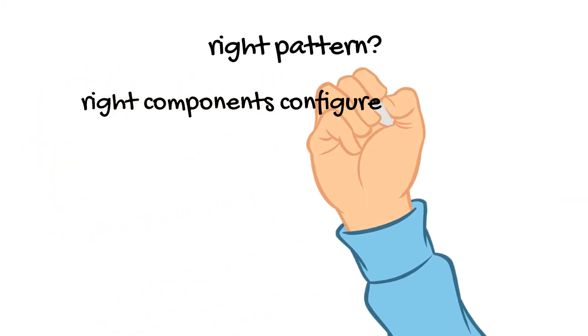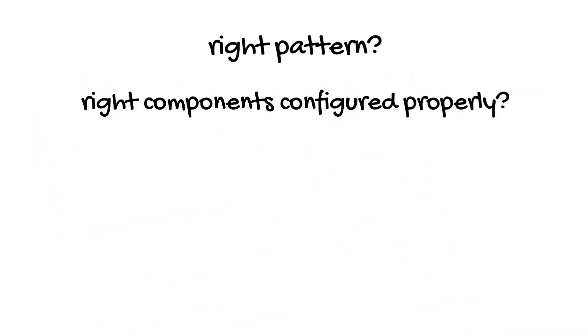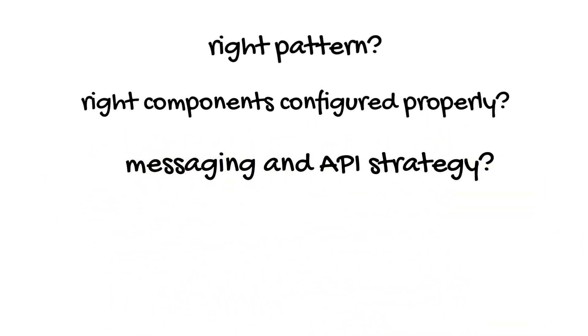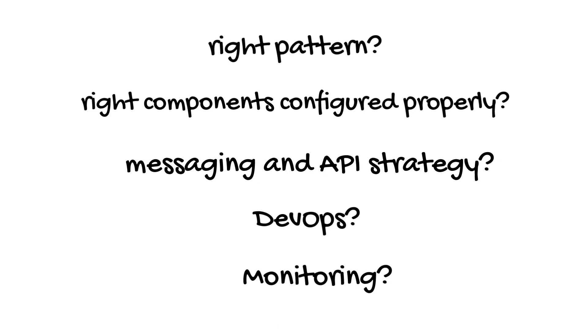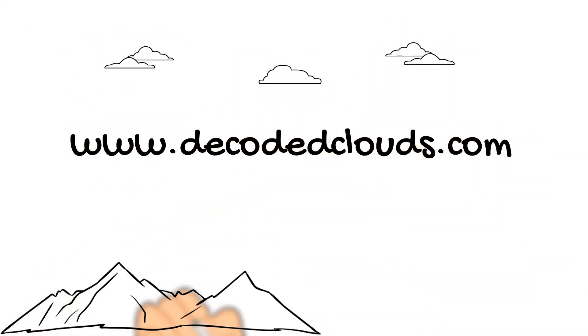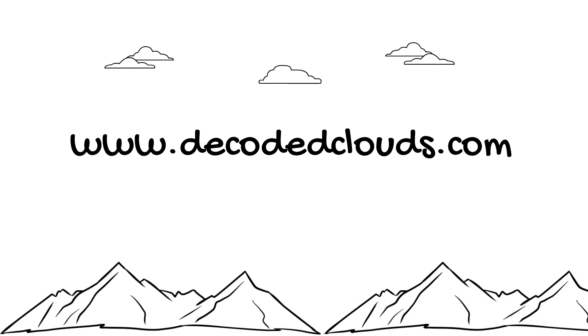So this is all great, but how do you choose the right patterns for a given situation? Once you choose a pattern, how do you choose the right Azure components and configure them properly? How do you build a robust messaging and API strategy? How do you get started building a robust DevOps and monitoring strategy? These are the topics I will be covering in future videos, so please subscribe to the channel to stay up to date. Check out our website at www.decodedcloud.com to get the latest on best practices when implementing an Azure iPaaS solution. Take care.